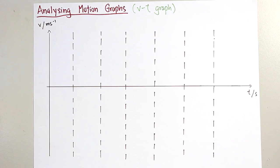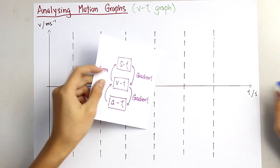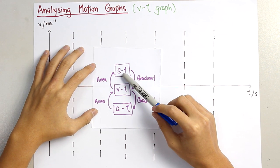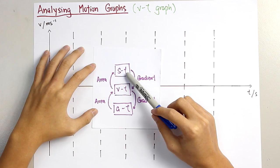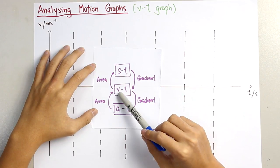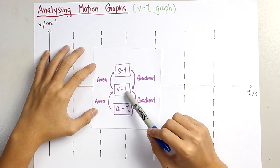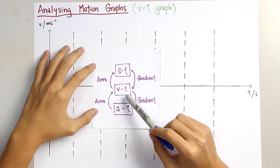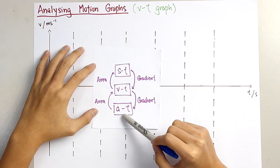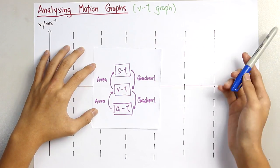Today we'll learn to analyze the motion graphs. As we all know, there are three motion graphs. The first one is the displacement against time, or ST graph. The second is velocity against time, or VT graph. And the third is acceleration against time, or AT graph.